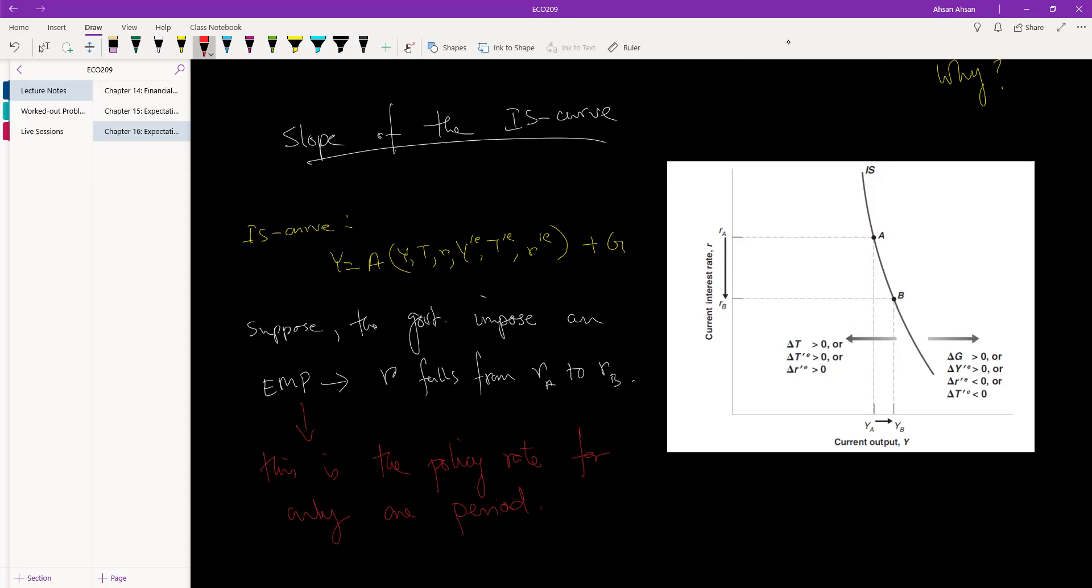Let's say the government changes it for this year, 2021, but then if our expectation of 2022, 23, 24, 25 doesn't change as well, so all that happens is that r falls for this period. Then are we going to change our behavior too much? Not really.